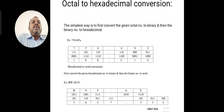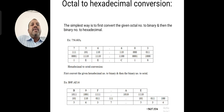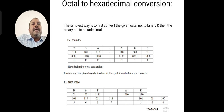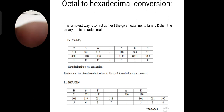Octal to hexadecimal conversion: the simplest way is to first convert the given octal number into a binary number, and then convert the binary number to a hexadecimal number. This makes it very easy and useful. We can easily convert octal to hexadecimal by first going octal to binary, then binary to hexadecimal — a very easy way to solve the problem. The example is as shown on our screen.